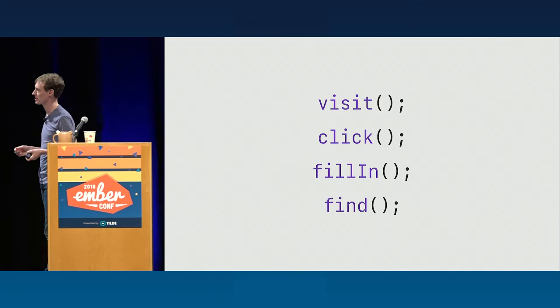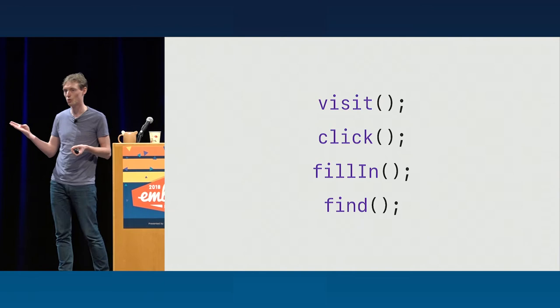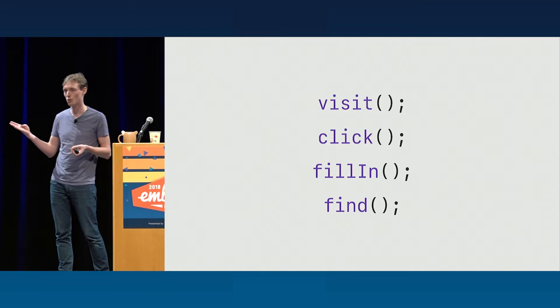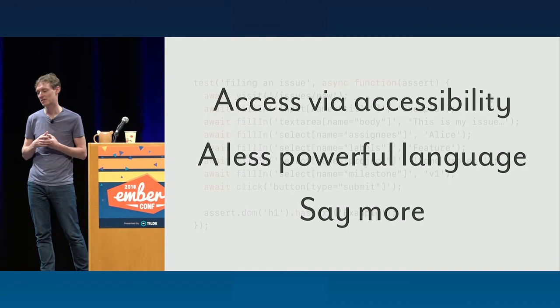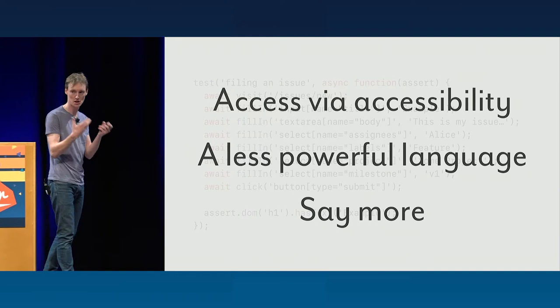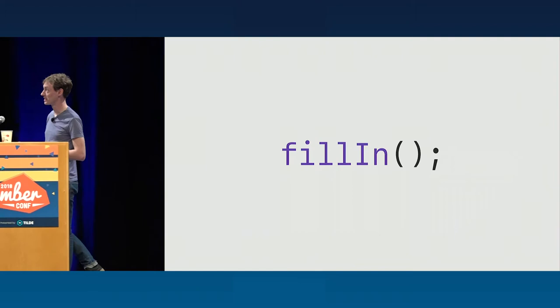The good news is that we already have a really constrained language in UI tests. Essentially, for most behaviors we want to talk about, it's these four verbs. But I think we can still push it further. So that's what we're going to do in this talk. We're going to take this acceptance test and ask questions of it: can we impose access via accessibility? Can we use a less powerful language? And can we get this test to say more about the application?